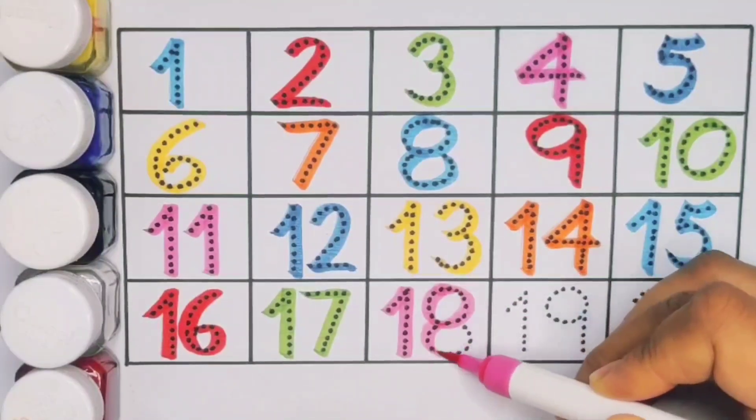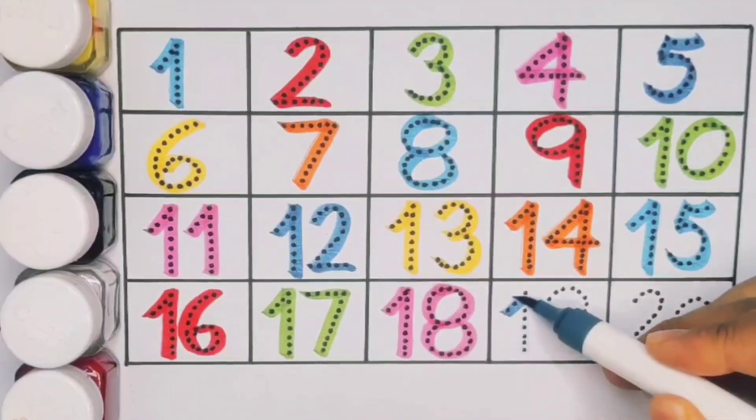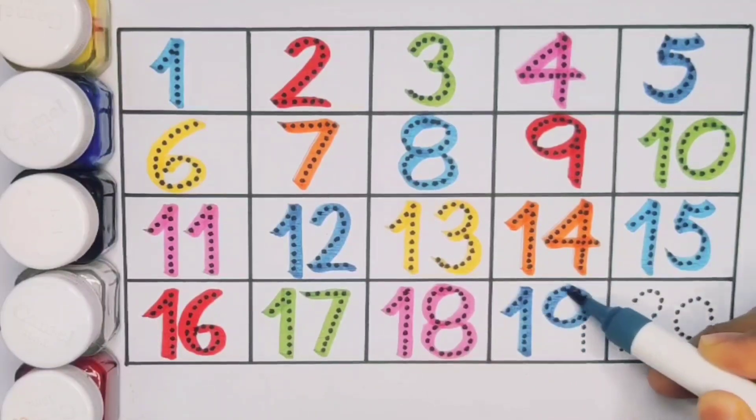18, 18, number 18. Next kids 19, 1, 9, 19, number 19.